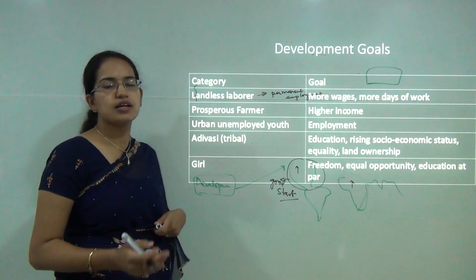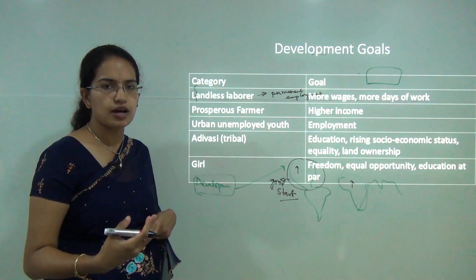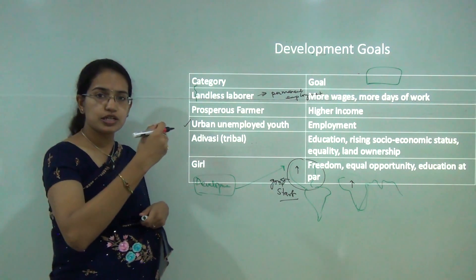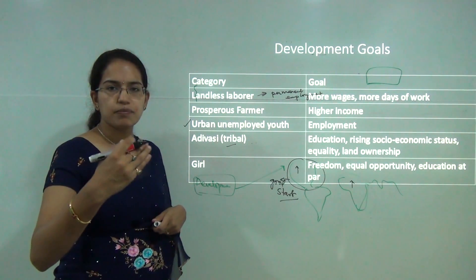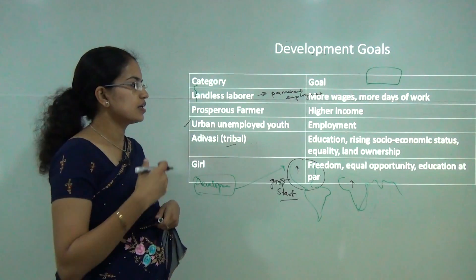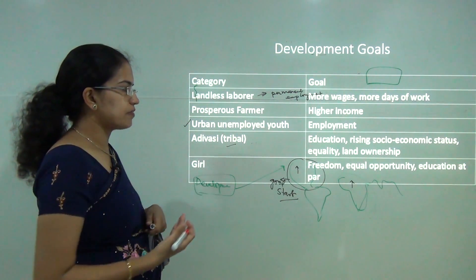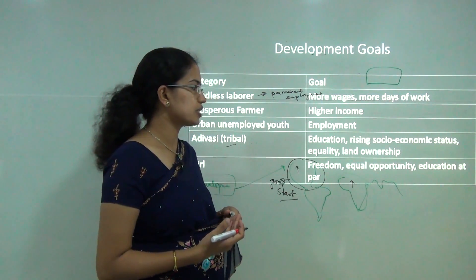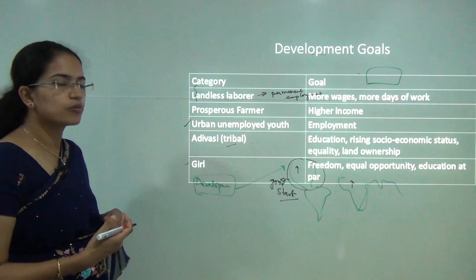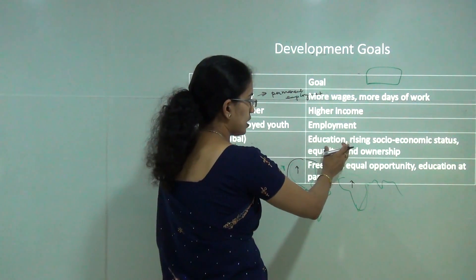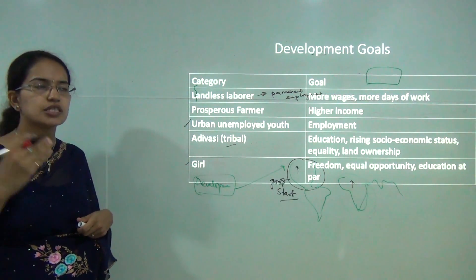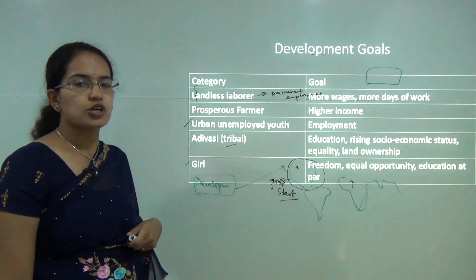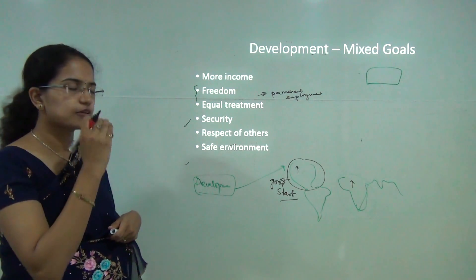From the perspective of a prosperous farmer, development could be gaining more income, bringing in more technology into the farms, and getting more prosperity. For an urban unemployed youth, development could be getting decent employment. For a tribal, the development goal could be getting good education, having a rising socioeconomic stature, and getting equality or land ownership. For a girl child, development could be equal opportunity, education at parity, or higher levels of freedom. So every person has different development goals they want to achieve.